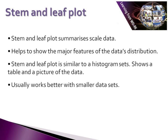The second type of graph we sometimes use to represent and summarize data is what we call stem and leaf plots. Stem and leaf plots are particularly useful at summarizing scale data and help to show the major features of the distribution of a particular data set. They take their starting point from histograms — they are very similar and show both a table and a picture of the data. They generally tend to work better with smaller data sets, as very large data sets can be difficult to plot and become unwieldy.